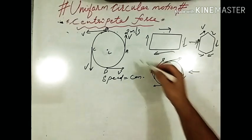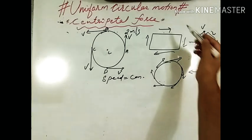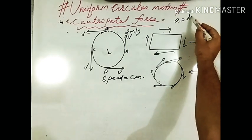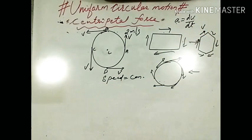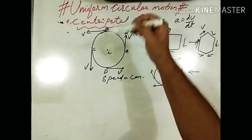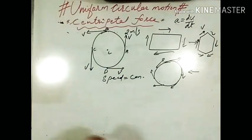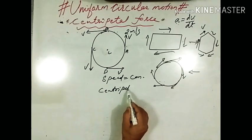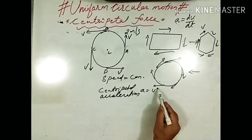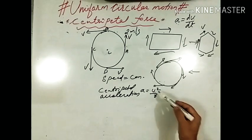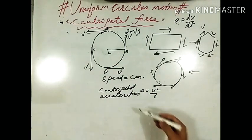This change in velocity gives rise to an acceleration. Whenever there is a change in velocity, there is an acceleration produced — acceleration is the rate of change of velocity, dv/dt. If velocity is constant, acceleration is zero. Here, the magnitude of velocity is not changing, but its direction changes, so acceleration is produced. This type of acceleration produced in uniform circular motion we call centripetal acceleration, whose magnitude is given by A = v²/r, where v is the velocity and r is the radius of the circular path.